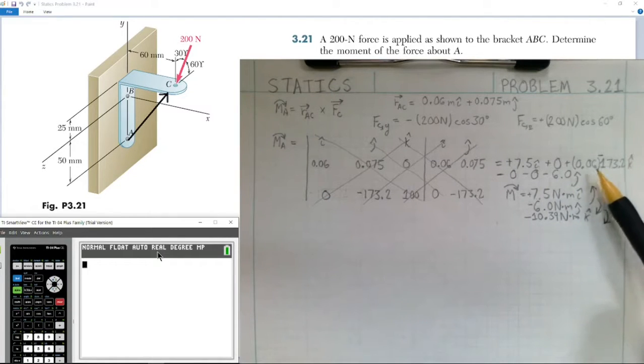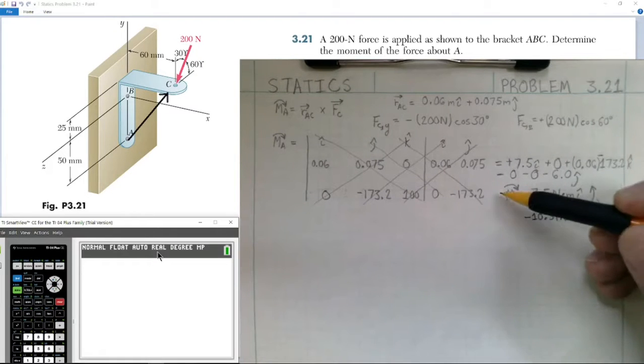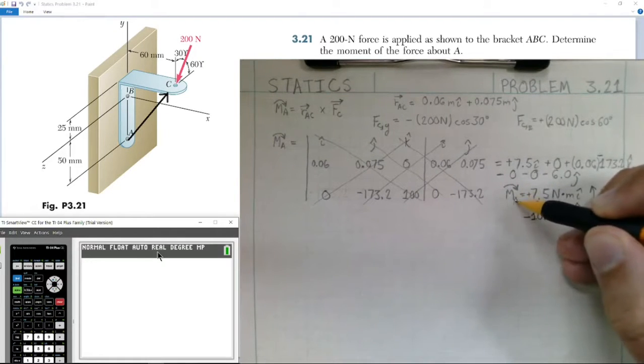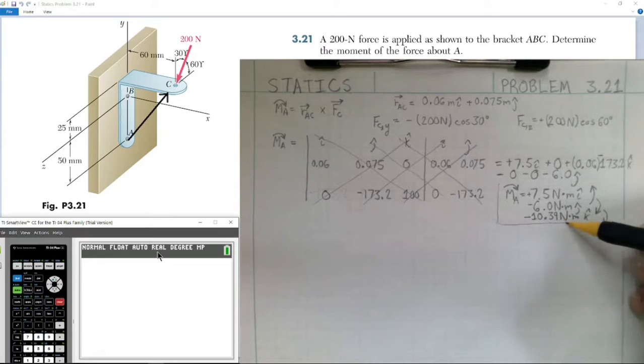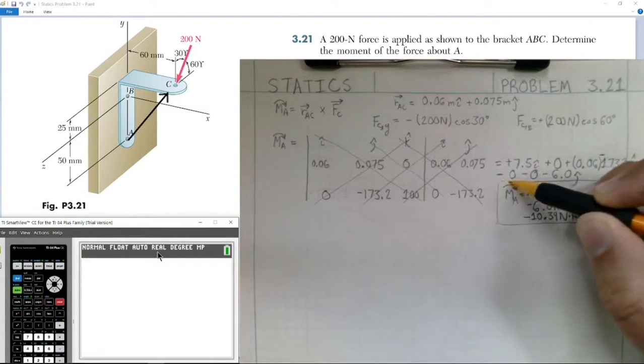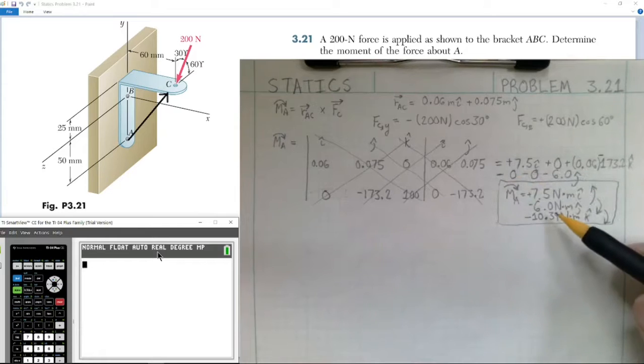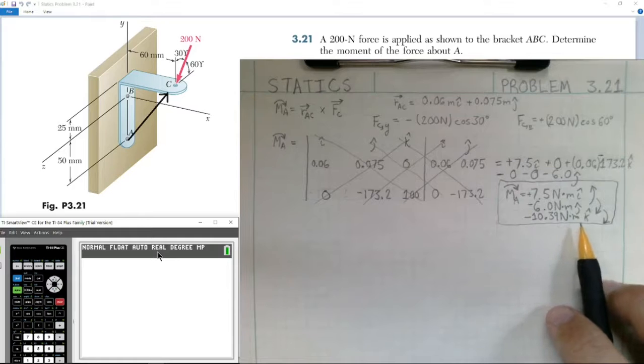Multiplying these two values out, we have our final answer. The moment about point A is equal to positive 7.5 newton-meters in the i-hat direction, negative 6 newton-meters in the j-hat direction, and negative 10.39 newton-meters in the k-hat direction.